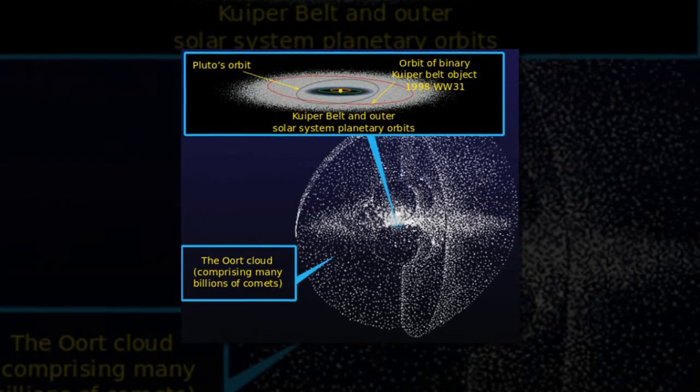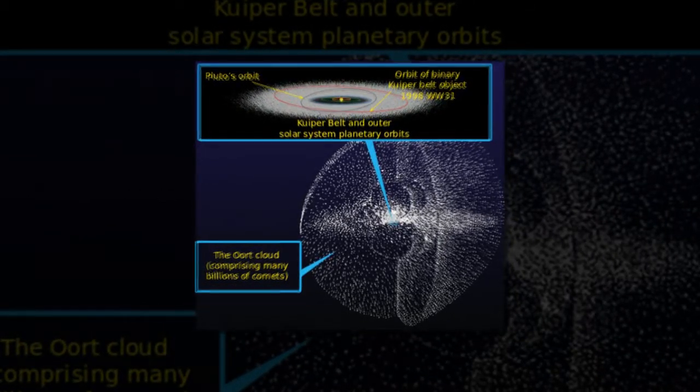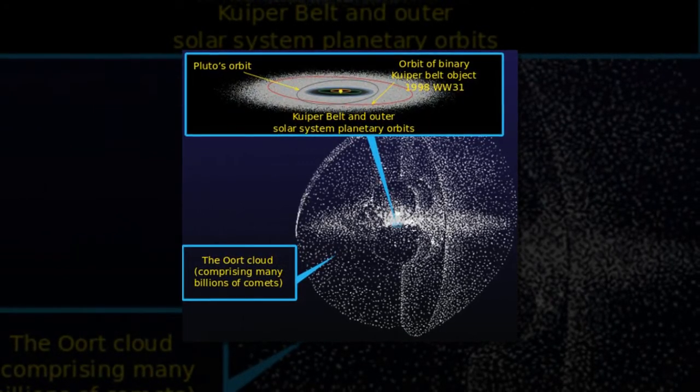Part of the Serpens Caput constellation, Gliese 710 currently sits some 64 light-years away. It is traveling in our direction though, and is expected to come within 1.2 trillion miles of Earth.